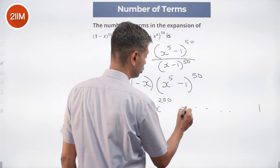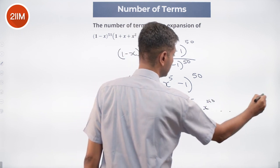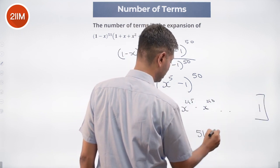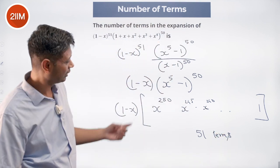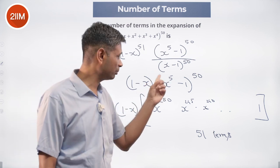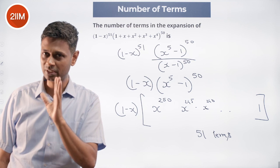After that there will be an x power 245 term, x power 240 term, there will be a total of 51 terms. So x power 5 minus 1 whole power 50, 51 terms will be there in that expansion as a starting point.